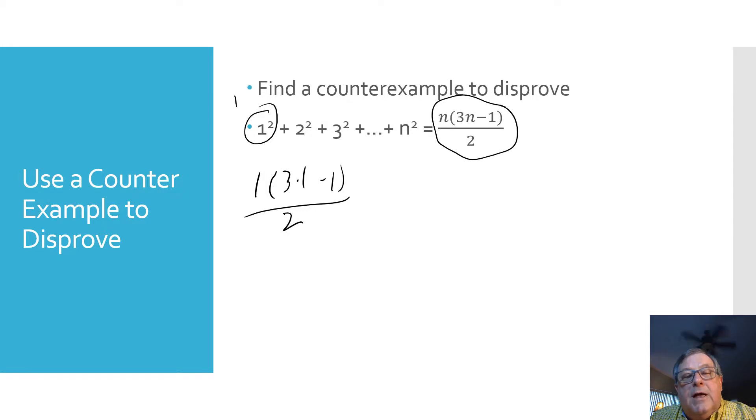Three times one and working inside the parentheses, three times one is three, and three minus one is two. So I've got one times two over two, which is equal to two over two, which is equal to one. Well, that gives us a true statement.